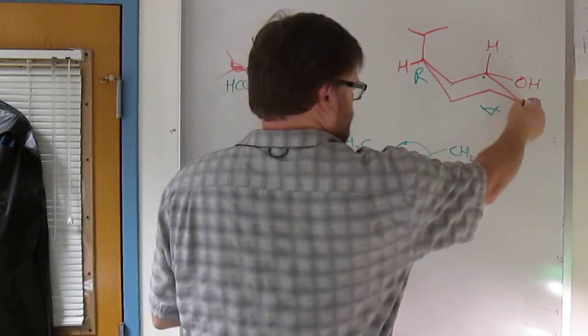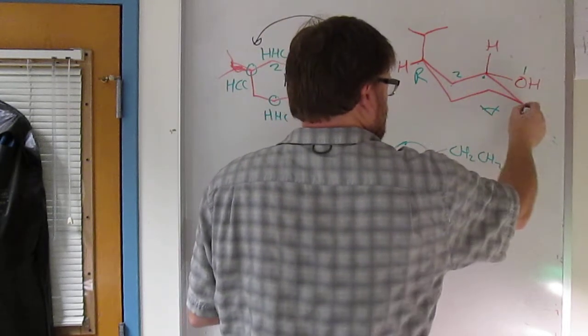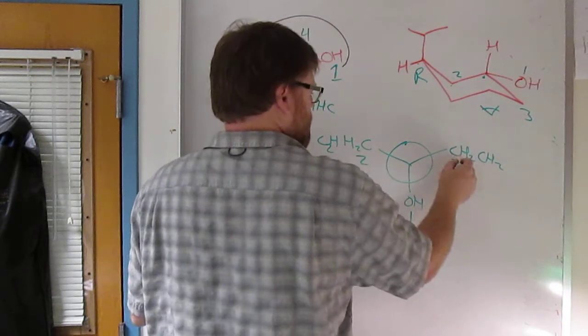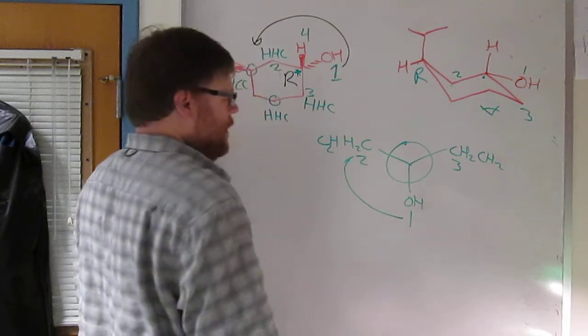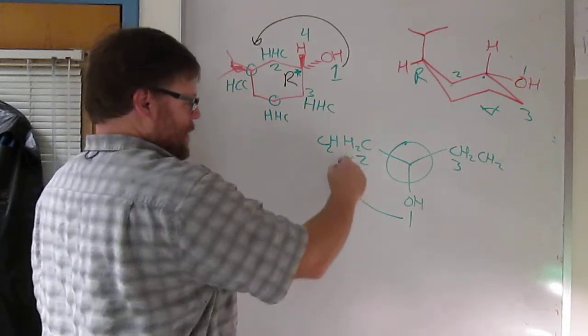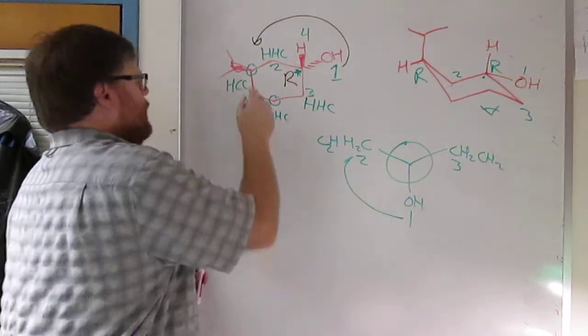So let's do priorities one, two, three, one, two, three. So as I go around that way, I've now got the H in the back. This is now a clockwise circle, so yeah, that's R as well. So I got it right. R and R.